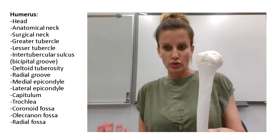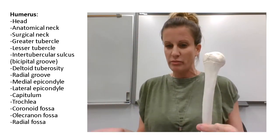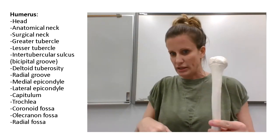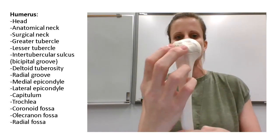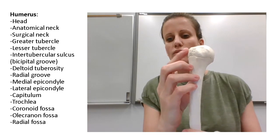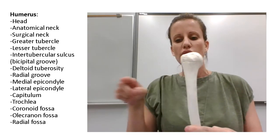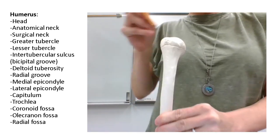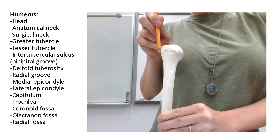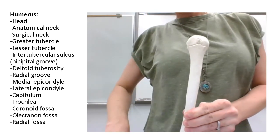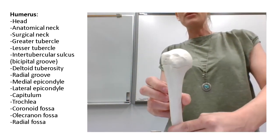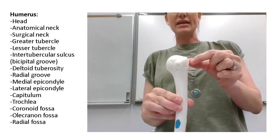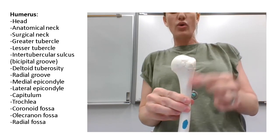We have two tubercles — a tubercle is just a bumpy protrusion from a bone, typically where a muscle is going to connect, where the tendon or ligament will insert. These two tubercles up by the head are the greater tubercle and the lesser tubercle. The lesser tubercle is towards the front, pointing anteriorly. The greater tubercle points out more laterally — it's the bulge that's lateral. From the back view, you can see the greater tubercle sticking out, but not the lesser one since it's more in the front.